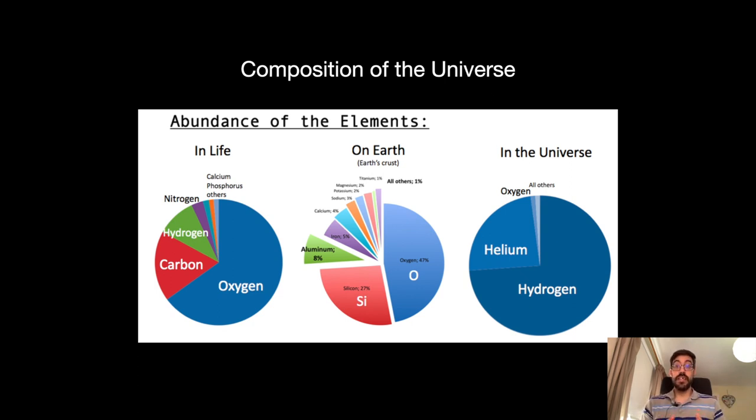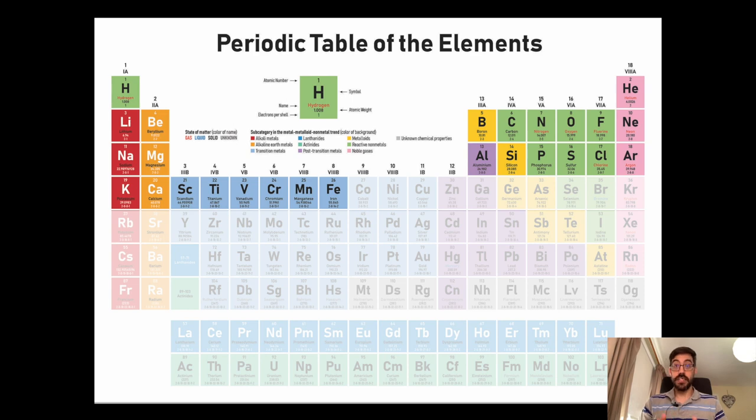While this can explain why carbon, oxygen, nitrogen, silicon are among the most common heavy elements, as you can see on these pie charts, it still fails at explaining the origin of all the other elements in the periodic table. Going back to the periodic table, we can explain it all the way to iron, but we know that the periodic table is much richer, so we need to investigate further.